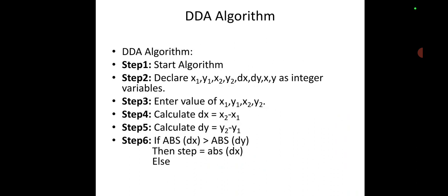The algorithm is like this: Step 1: Start algorithm. Step 2: Declare x₁, y₁, x₂, y₂ - these are the end points between which we are drawing the line. Delta x, delta y - that is incrementing elements in x and y, and x, y are the elements which we are using for plotting a point as integer variables.